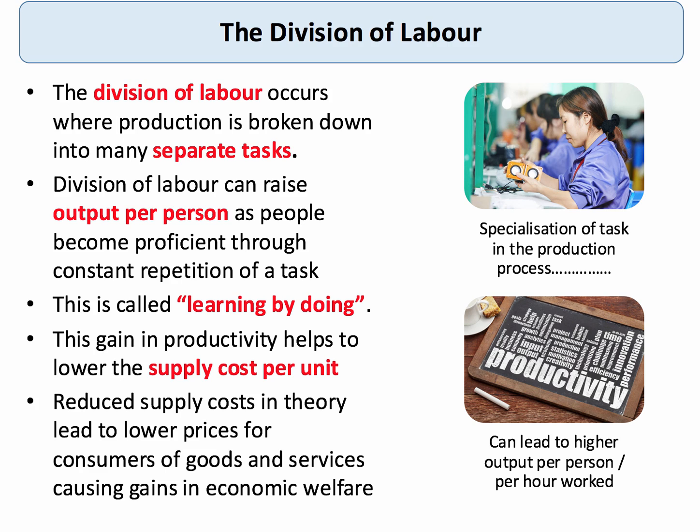This gain in labour productivity — assuming you're paying people more or less the same, though you might have an element of productivity-related pay — means that for a given wage, if people are more productive, the supply cost per unit comes down. That brings down supply costs, brings down the marginal cost of bringing goods to market, and in theory can feed through to lower prices for consumers, higher real incomes, and gains in welfare.